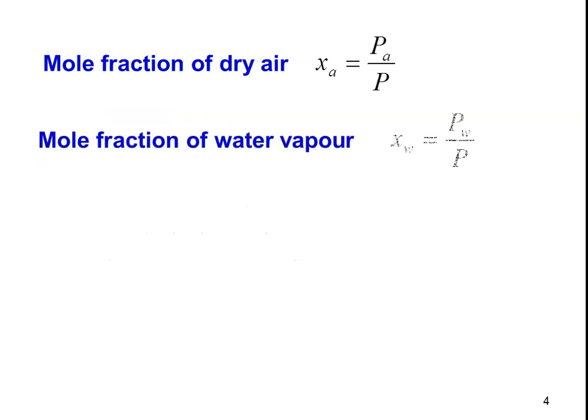The mole fraction of air and mole fraction of water vapor: we have number of moles of dry air and number of moles of water vapor in the mixture. Mole fraction of air is number of moles of air divided by total number of moles of the mixture, which equals Pa by P — partial pressure of air divided by total pressure. Similarly, mole fraction of water vapor Xw equals Pw by P.